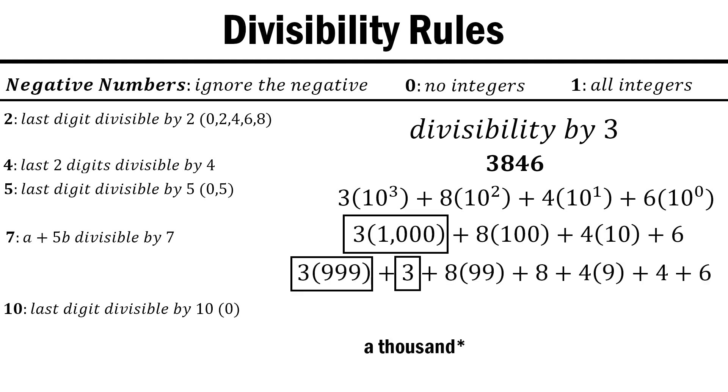Since 1000 is equal to 999 plus 1, we can turn 3 times 1000 into 3 times 999 plus 3 times 1. We do the same for the other multiples of 10. 8 times 100 becomes 8 times 99 plus 8 times 1, and 4 times 10 becomes 4 times 9 plus 4 times 1. And since 3 divides 999, 99,